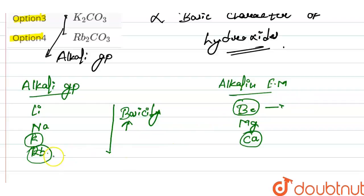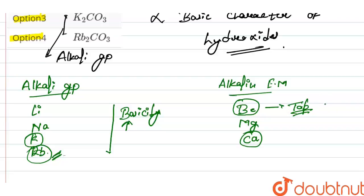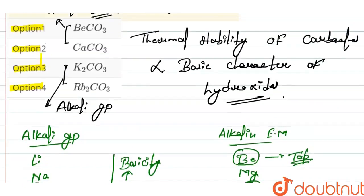Rubidium is the most basic because it is present at the bottom of the alkali group. Beryllium is the top element in the alkaline earth metal group, and that is why it has less basic character. Basic character is directly proportional to thermal stability.